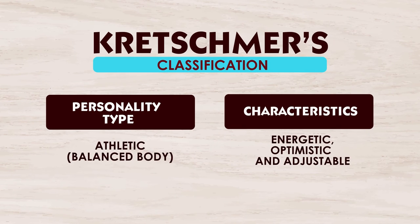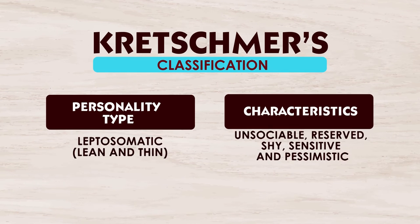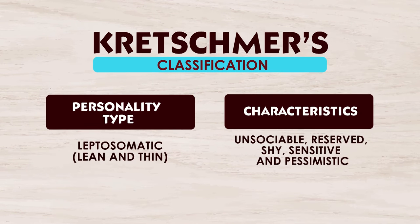Then we have a balanced body type also, called athletic. They are energetic, optimistic, and adjustable. And finally in this category, the last one is leptosomatic. These people are lean and thin, and their characteristics are unsociable, reserved, shy. They are sensitive and mostly pessimistic.